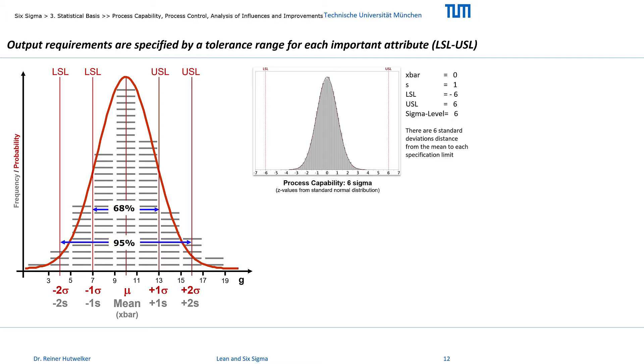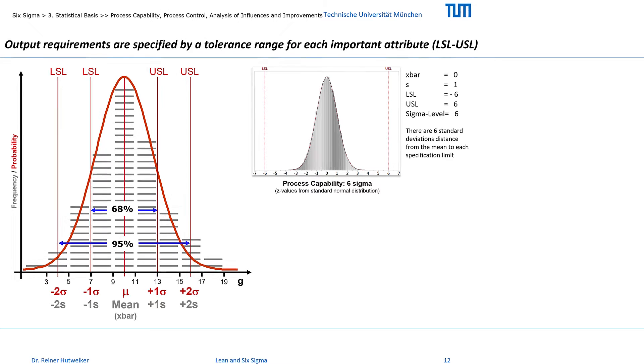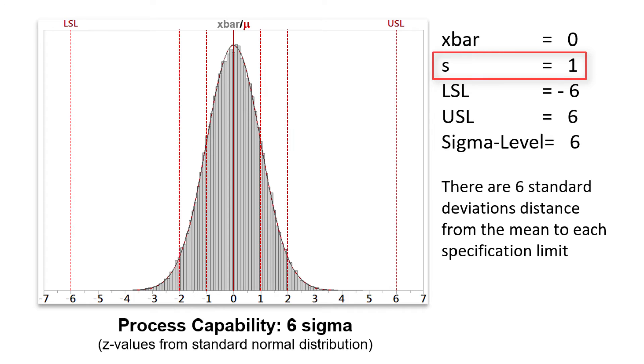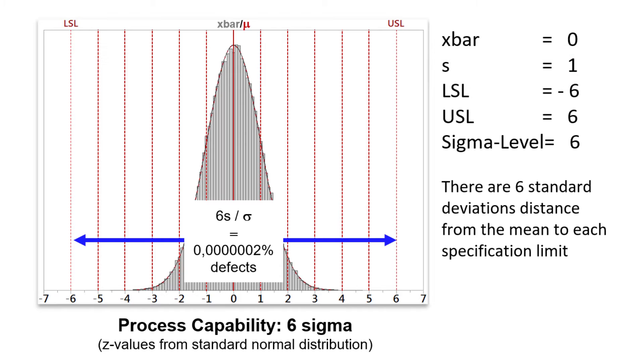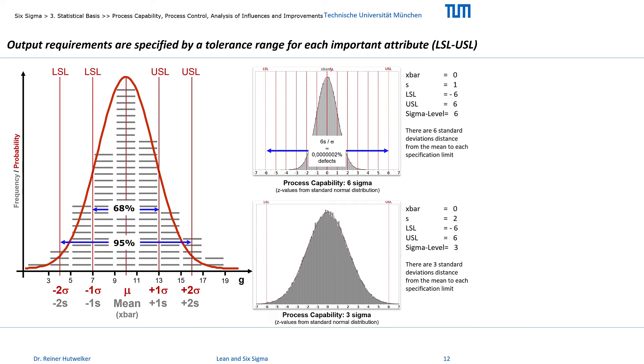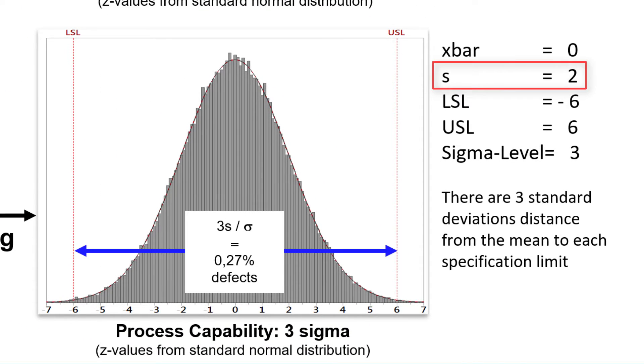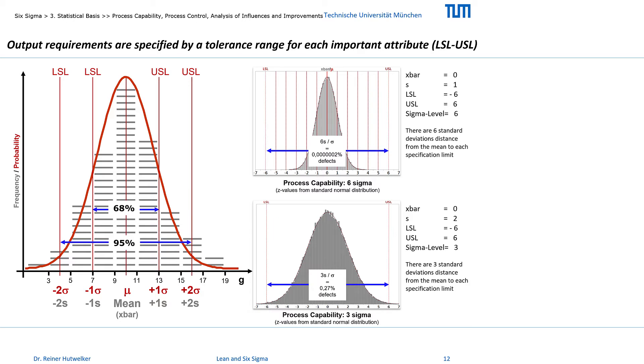This principle is further illustrated by my simulated 6 sigma process. There is an interval width of 6 standard deviations from the mean value to the specification limits. And as you can see, there is still a lot of space from the extreme values of the distribution up to these respective specification limits. Now compare these relationships with the simulated 3 sigma process. The extreme values of this distribution are already outside the specification limits, and it can easily be evaluated that the 3 sigma process is less capable than the 6 sigma process.